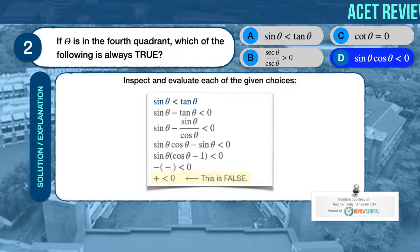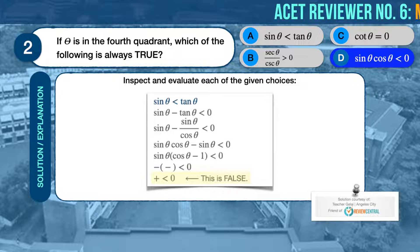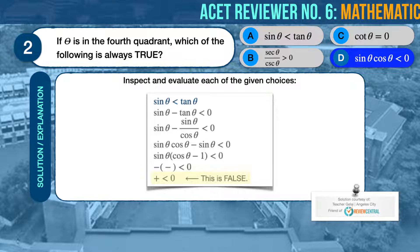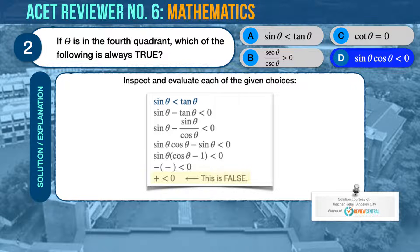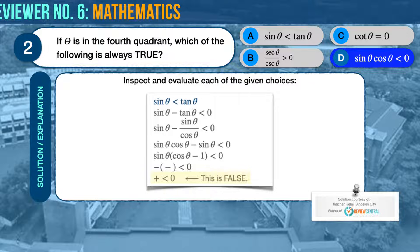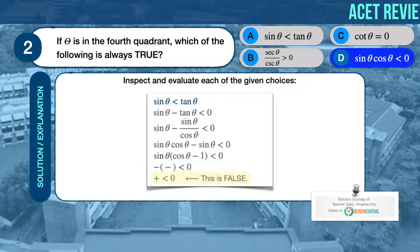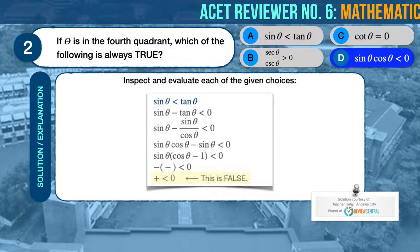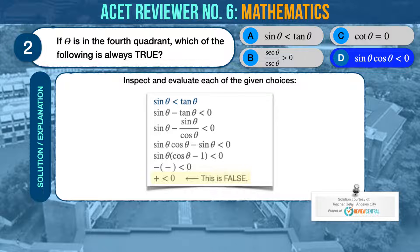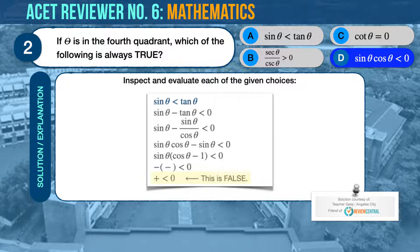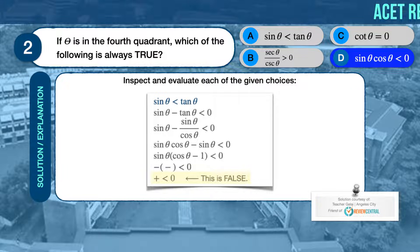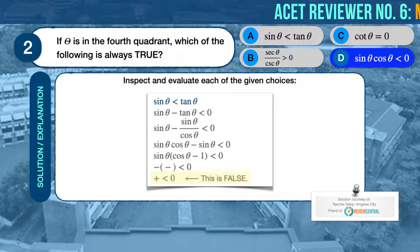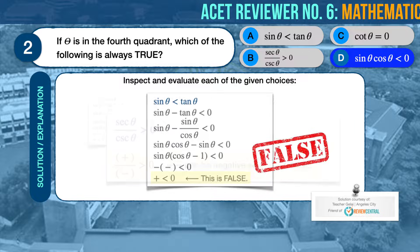Let's inspect and evaluate each of the given choices. First, sine theta is less than tangent theta. Let's move tangent theta to the left. The inequality should now be sine theta minus tangent theta is less than zero. From trigonometric identities we know that tangent is equal to sine over cosine. From here we work out the inequality to be sine theta times the quantity cosine theta minus one is less than zero. Since theta is in the fourth quadrant, sine theta should be a negative number. Cosine theta should be a positive number that is less than one. A number that is less than one, minus one, should result to a negative number. Multiplying two negative numbers will result to a positive number and any positive number is not less than zero. Therefore, choice A is false.